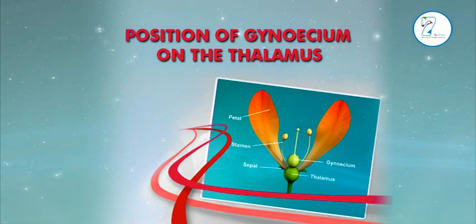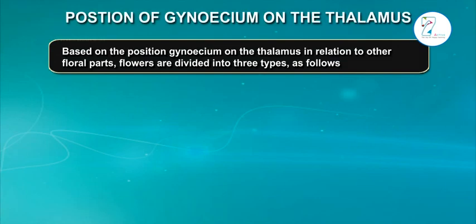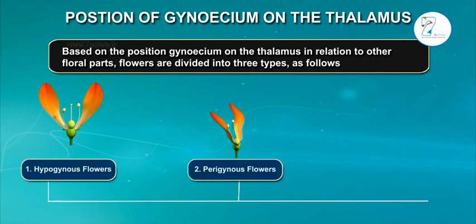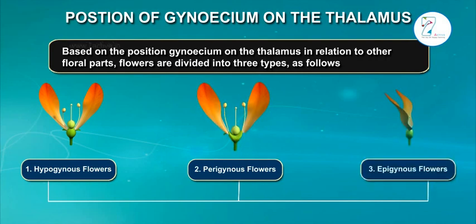Position of gynoecium on the thalamus. Based on the position of gynoecium on the thalamus, in relation to other floral parts, flowers are divided into three types as follows: 1. Hypogynous flowers, 2. Perigynous flowers, and 3. Epigynous flowers.